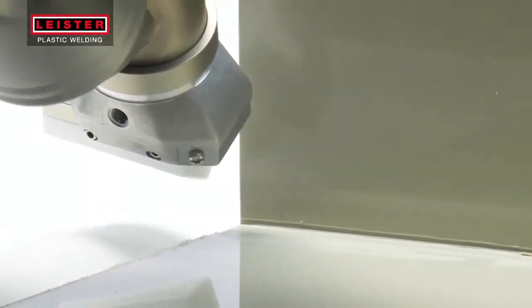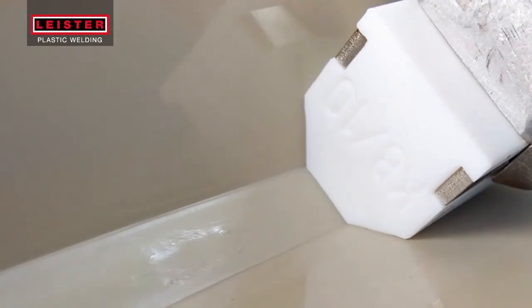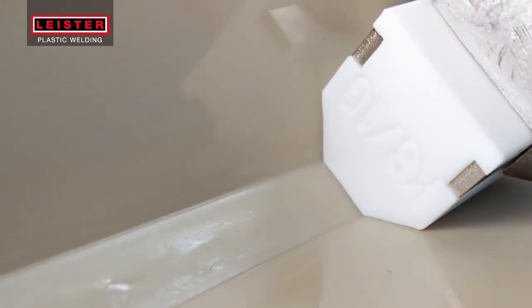Preheat the area where the welding begins. Hold the extrusion welder at a right angle while pressing the trigger to engage the drive motor at the same time. Move the welder forward at a constant speed and pressure along the areas to be joined.